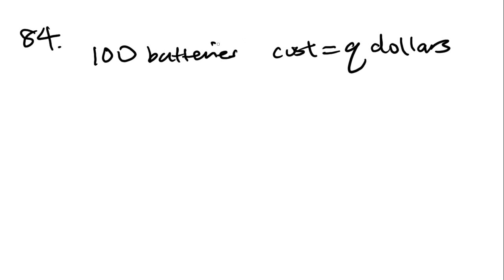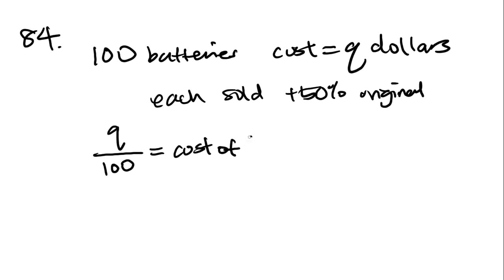Number 84 says, a dealer originally bought 100 identical batteries at a total cost of Q dollars. If each battery was sold at 50% above original cost per battery, so each sold 50% above original. Then in terms of Q, how many dollars was each battery sold? For how many dollars was each battery sold? So first thing we want to do is figure out if Q is the total cost of all the batteries, so Q is the total cost, then Q divided by 100 batteries is going to get us the cost of one battery. So like if Q was $100 and there were 100 batteries, that means each battery is $1. So this is the equation that we would use to set it up.